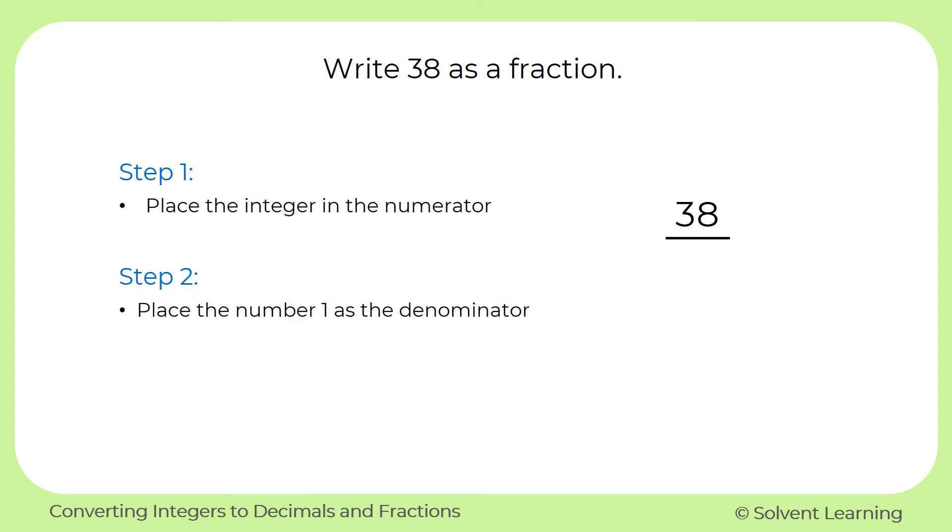Second step, place a 1 as the denominator. And that's it. If you remember, a fraction represents division. So this is really just saying 38 divided by 1, which is still just equal to 38. So by placing a 1 as the denominator, or dividing by 1, we don't change the value of our number. It's still worth 38.